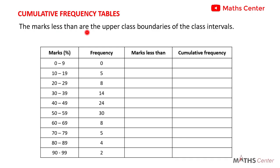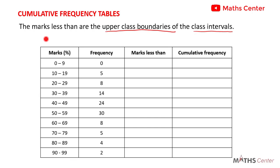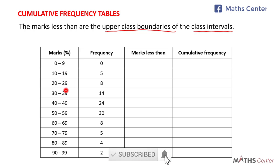The marks less than are the upper class boundaries of the class intervals. We have different class intervals here: 0 to 9, 10 to 19, 20 to 29, and it continues to 90 to 99. So we need to find the upper class boundaries of these class intervals.